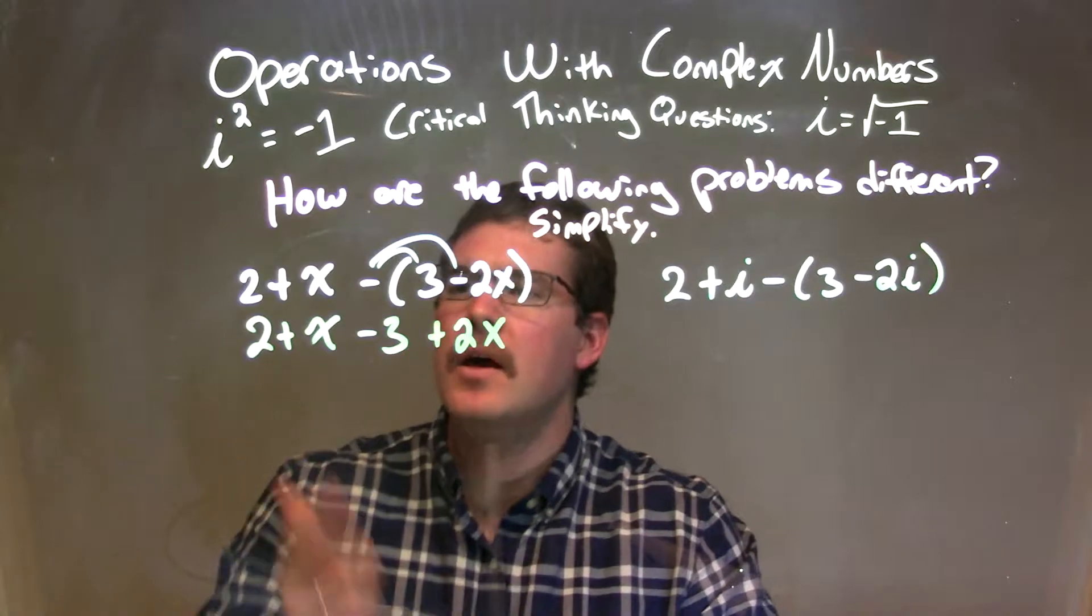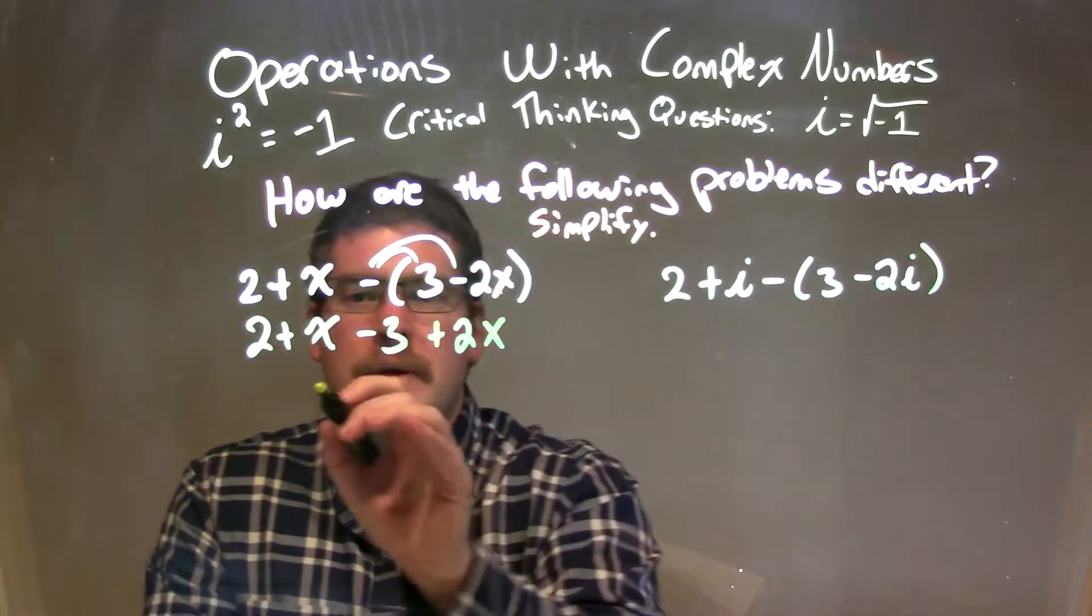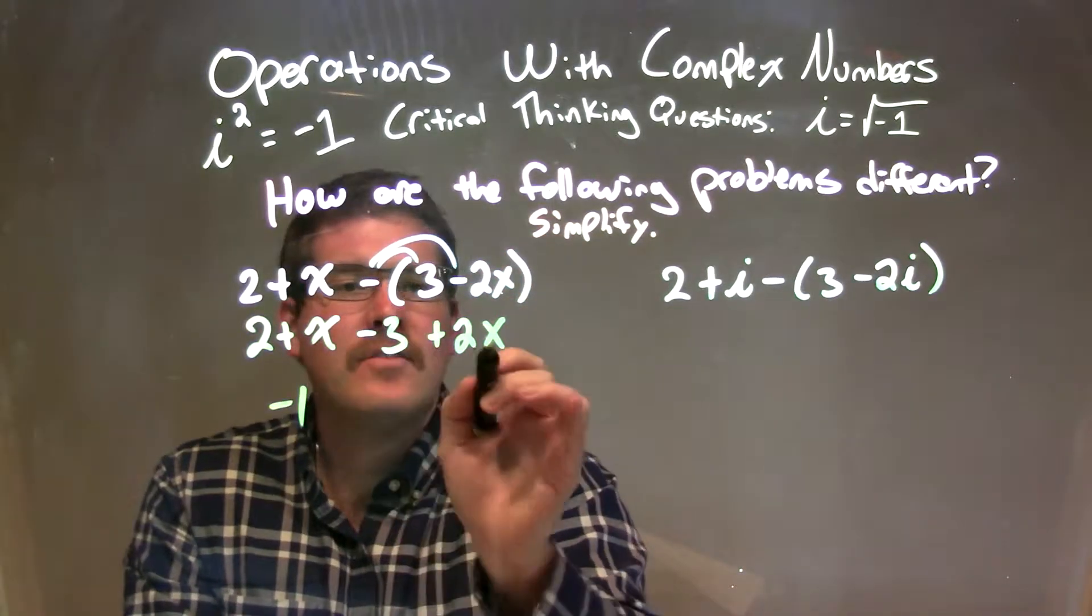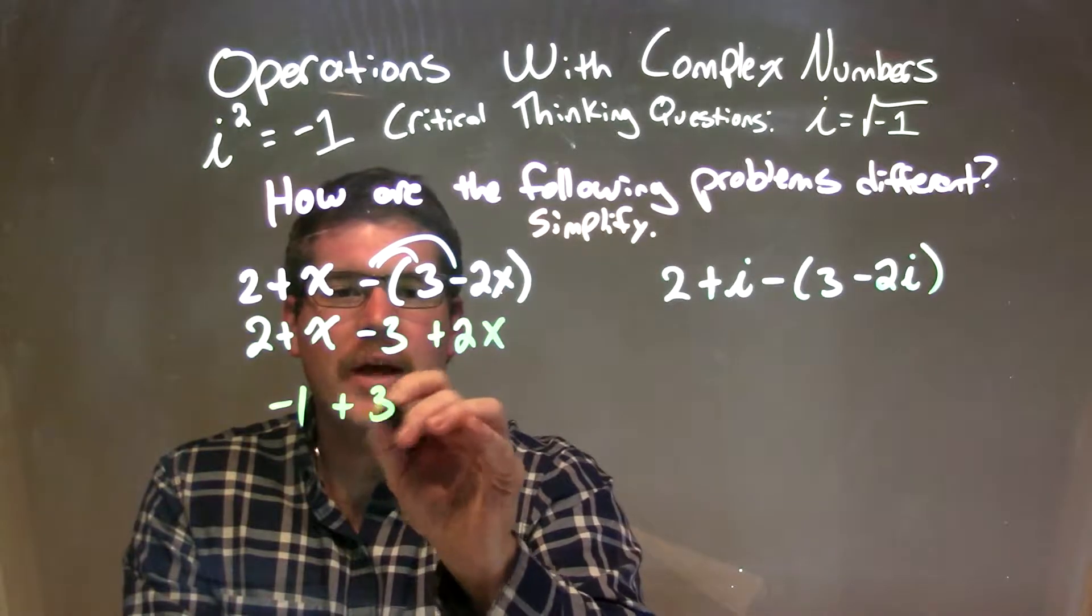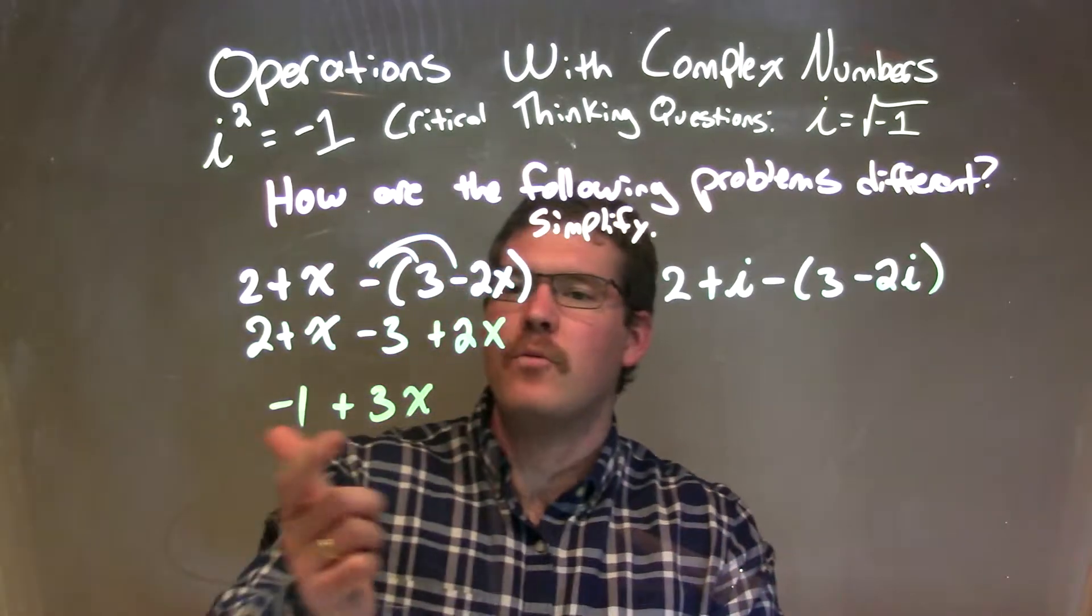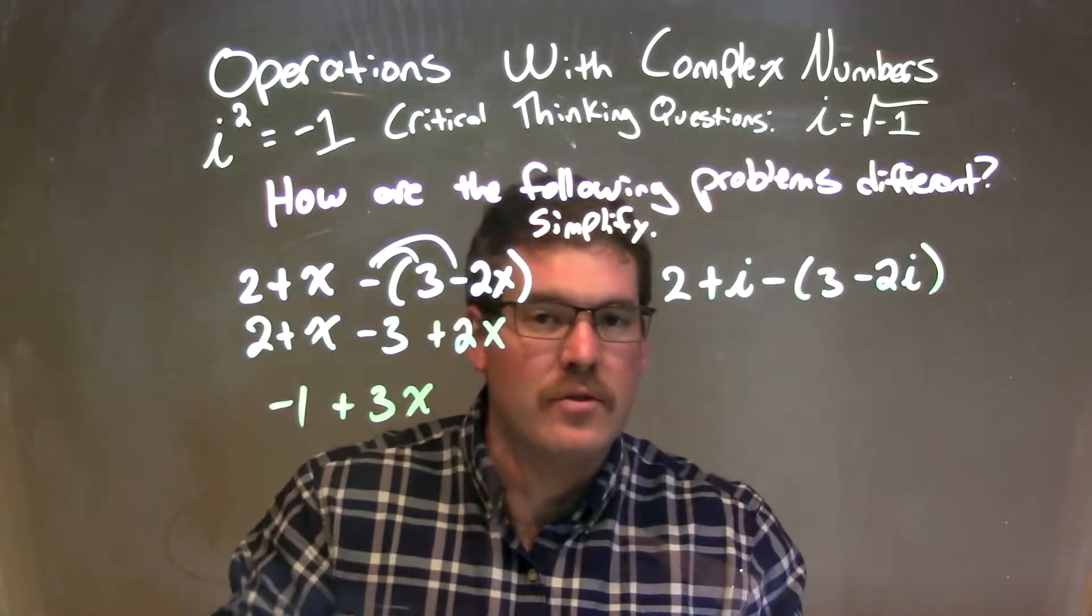At this point, I want to combine my like terms. 2 and negative 3 come together to be a negative 1. And then the x and 2x come together to be a 3x. Leaving me with a negative 1 plus 3x as my final answer for this one.